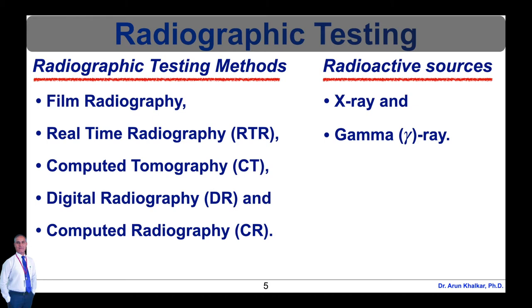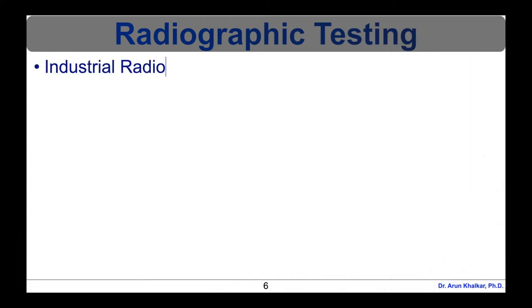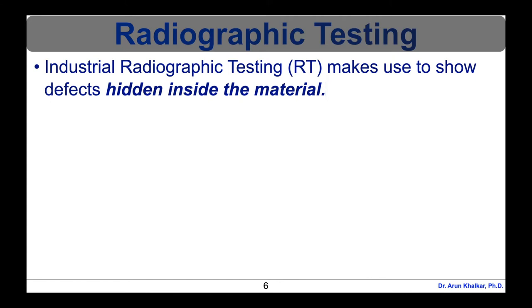Because of the radioactivity involved in radiography testing, it is of paramount importance to ensure that the local rules are strictly adhered to during the operation. Industrial radiography testing makes use of X-ray or gamma radiation to create images that can show defects hidden inside the material.